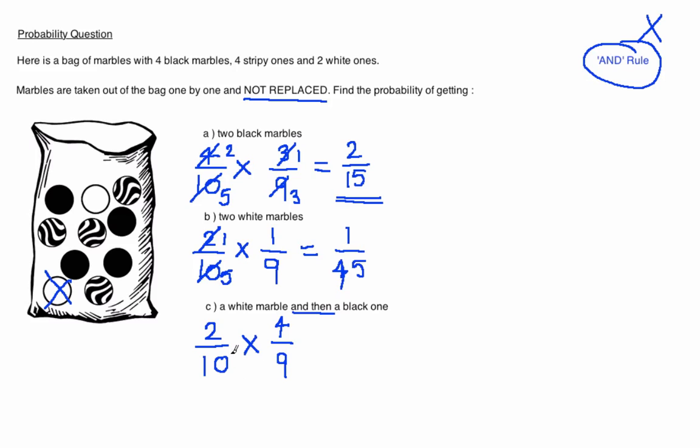Once again we can cancel. We can either cancel down the 4 and the 10 or the 2 and the 10. I am going to divide the 2 and the 10 by 2. 2 divided by 2 is 1. 10 divided by 2 is 5. We cannot cancel down any further. So now we multiply across. 1 times 4 is 4. 5 times 9 is 45. This is your final answer.